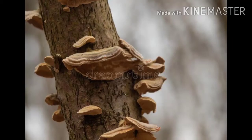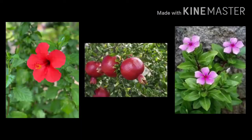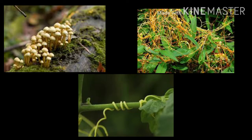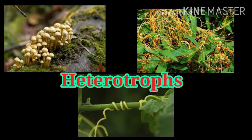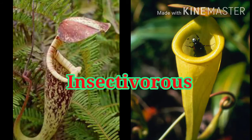Some plants grow even without stems, leaves, or roots and are very different from ordinary plants. Plants that make their own food in sunlight are called autotrophic plants — for example, hibiscus, pomegranate, and periwinkle. Some plants like fungi, lorenthus, and dodder use other plants for food and are called heterotrophic plants. Plants like the pitcher plant even consume insects — they are insectivorous plants.